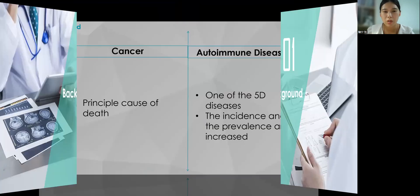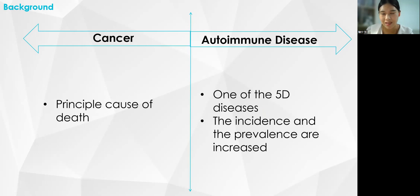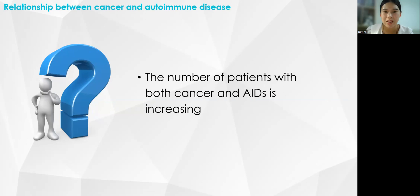Cancer is still one of the principal causes of death. Compared to cancer, we still know very little about autoimmune diseases, also referred to here as AIDS, although it is a category of 5D diseases: disability, death, discomfort, drug toxicity, and dollar loss. AIDS can lead to reduced quality of life, secondary diseases caused by drug toxicity, financial loss to individuals or families, and even disability. The prevalence and incidence of AIDS, which are increasing year by year, have attracted significant attention.